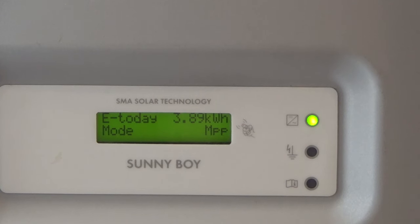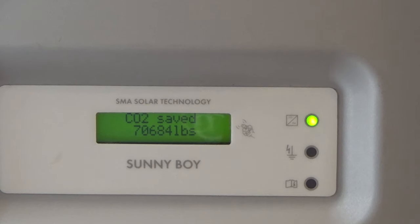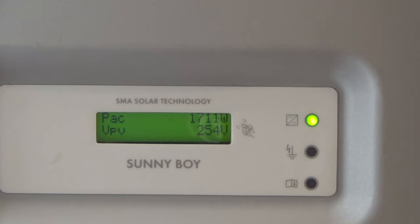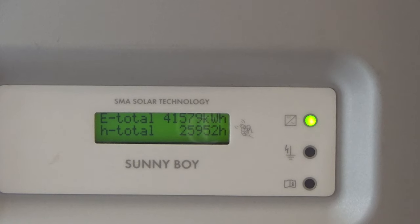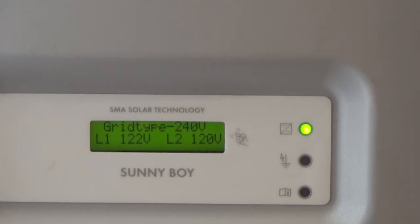Alright, let's take a look at the screen on my Sunny boy inverter here. Let's see how much is currently produced. Wait for it. 1,711 watts and 254 volts. Alright. So from there we can do the math to calculate how many amps that is. So I'm going to use my clamp meter and clamp on a single wire here. Let me zoom out a little bit.